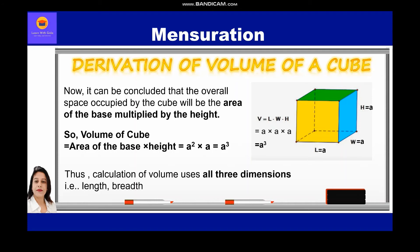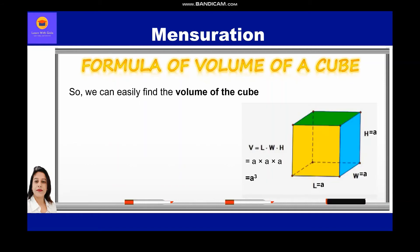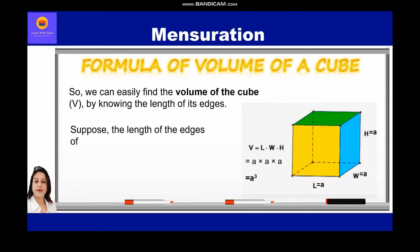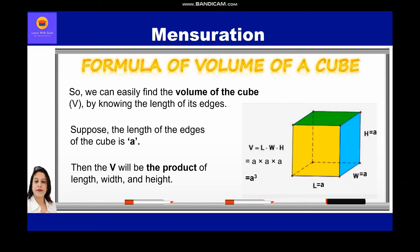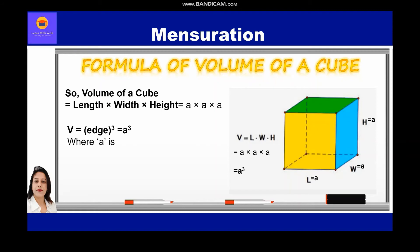Volume calculation uses all three dimensions — length, breadth, and height. We can easily find the volume of the cube V by knowing the length of its edges. Suppose the length of the edges of a cube is a, then V will be the product of length, width, and height. So volume of a cube = length × width × height = a × a × a, or V = a³, where a is the length of the side or edge of the cube.